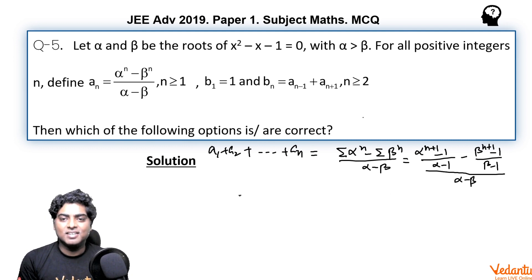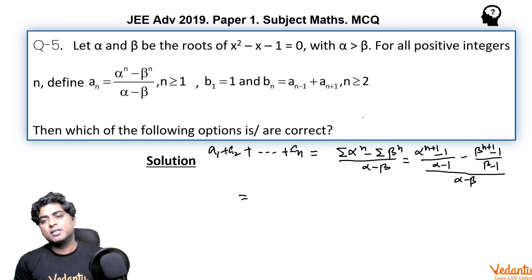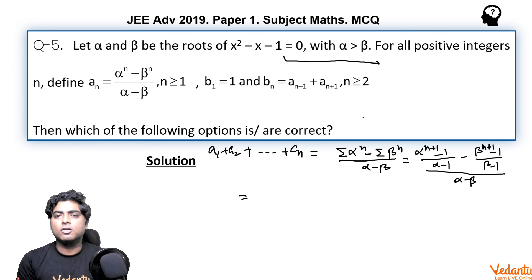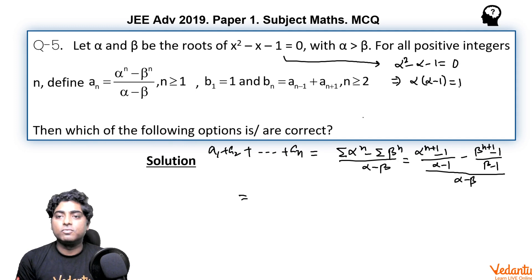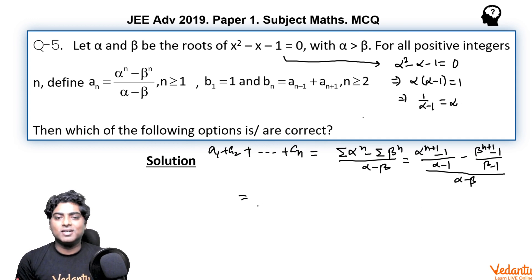In order to handle the (α - 1) and (β - 1) terms in the denominator, I go back to the quadratic. Since alpha is a root, α² - α - 1 = 0, so α(α - 1) = 1, which means 1/(α - 1) = α. This substitution makes things clean.